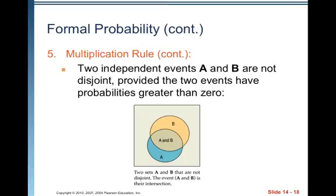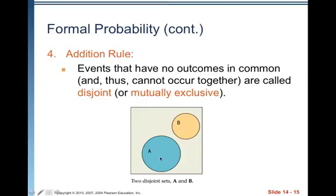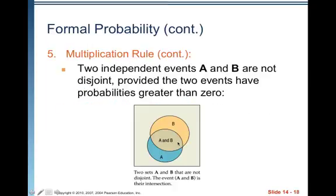The reason independent events cannot be disjoint is that A occurring has no effect on the probability of B occurring. With mutually exclusive events, if I know A occurs, the probability of B occurring is zero because there's no overlap, and vice versa. So if A and B have any probability greater than zero, they must have some overlap, because the probability of B has to be the same whether or not A occurs — A can't give you any information about the likelihood of B.